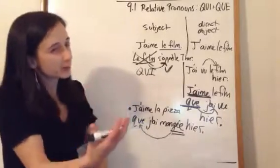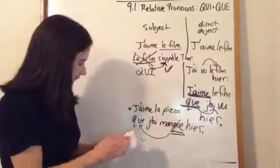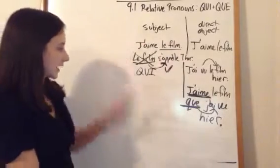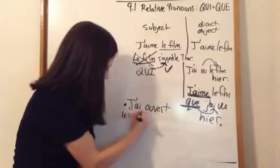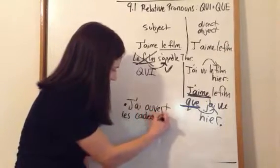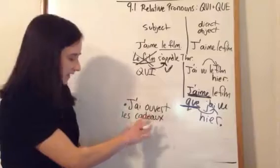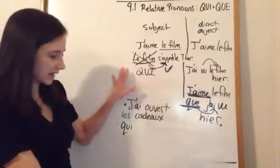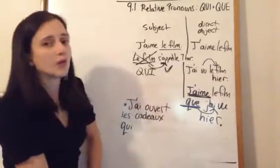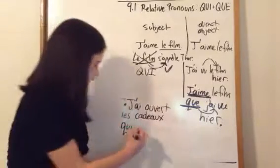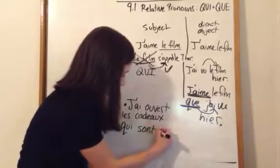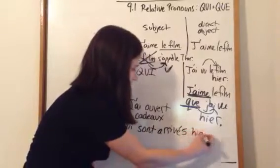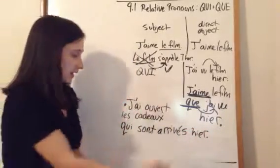One other thing, and this should be a little bit more obvious. If we have qui in it, so that was with avoir. Let's go back to qui, I opened the gifts. J'ai ouvert les cadeaux, I open the gifts. Which, again we have the qui. Arrive, now do you remember? Arrive takes être. Qui sont arrivés. Yeah. Notice.